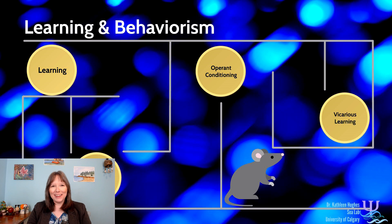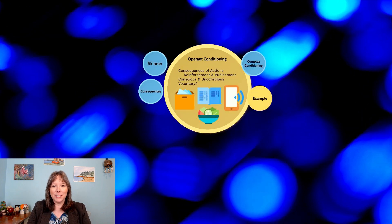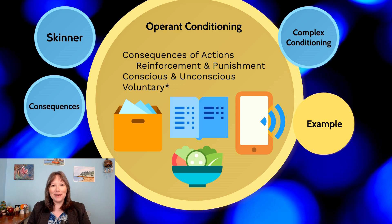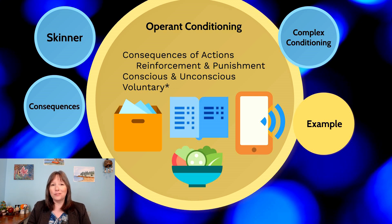We already talked about classical conditioning and how it was the pairing of antecedents or stimuli to evoke an involuntary reflex. Next up we're going to talk about operant conditioning, which is something very different. Operant conditioning is not about the antecedents or what comes before a behavior — it's about the consequences or what comes after a behavior, and the consequences are either something that's going to encourage or discourage the behavior.